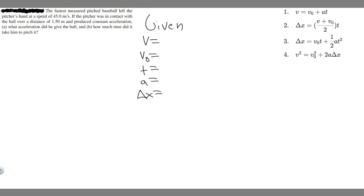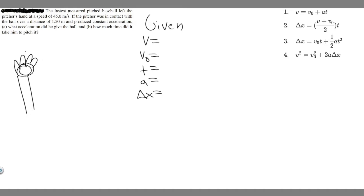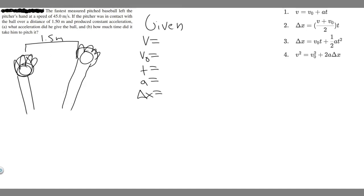The fastest measured baseball left the pitcher's hand at a speed of 45 meters per second. I'm going to draw what's going on. Imagine we have a hand here — the pitcher has the ball and is going to throw it. The ball will leave his hand after traveling 1.5 meters, because he's in contact with the ball over a distance of 1.5 meters. He starts here, travels this distance, and at this point he releases it, leaving his hand at 45 meters per second.